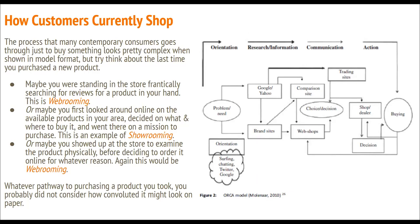The local model, as shown here, was one attempt at modeling the process that multi-channel users go through when deciding what, when, or where to purchase. This is a very basic model and does not account for the switch between devices, nor does it include social media information searching or sharing. However, this is a fair representation of the process that the average consumer goes through to buy a product.